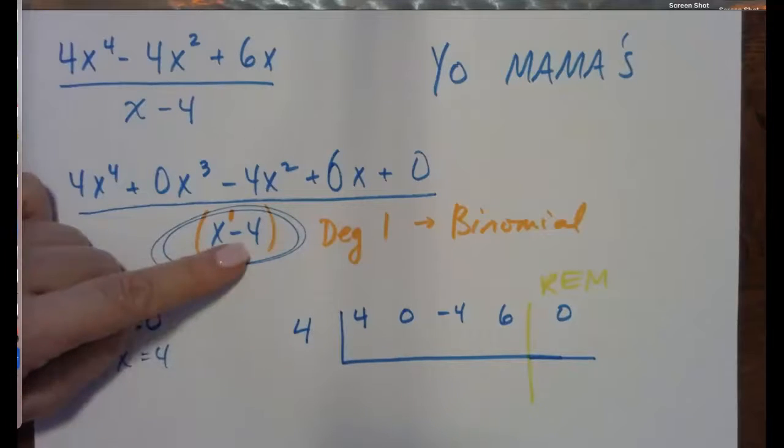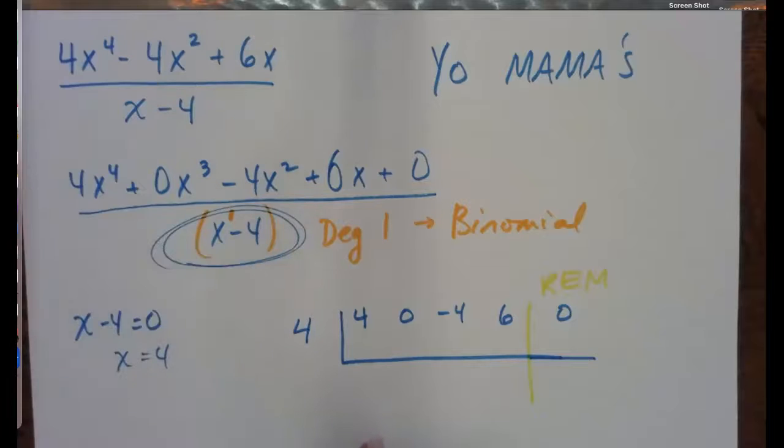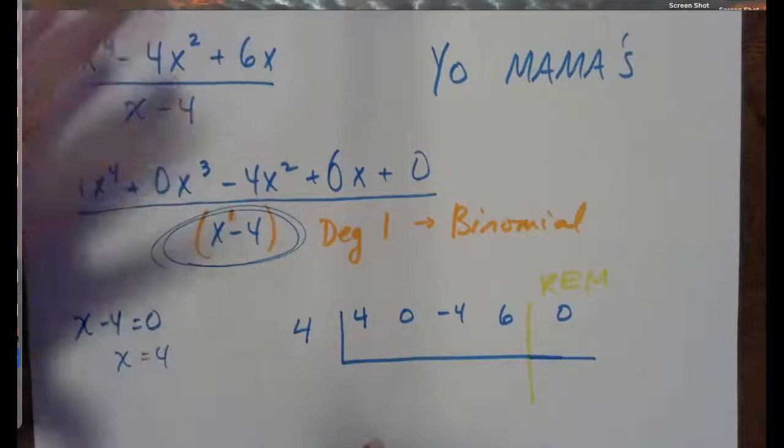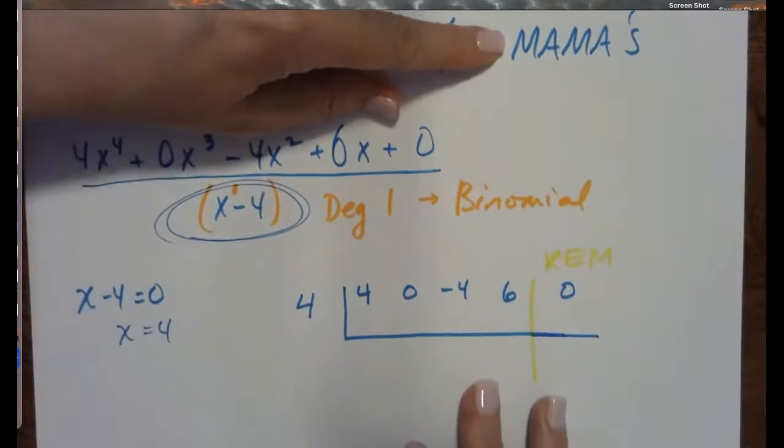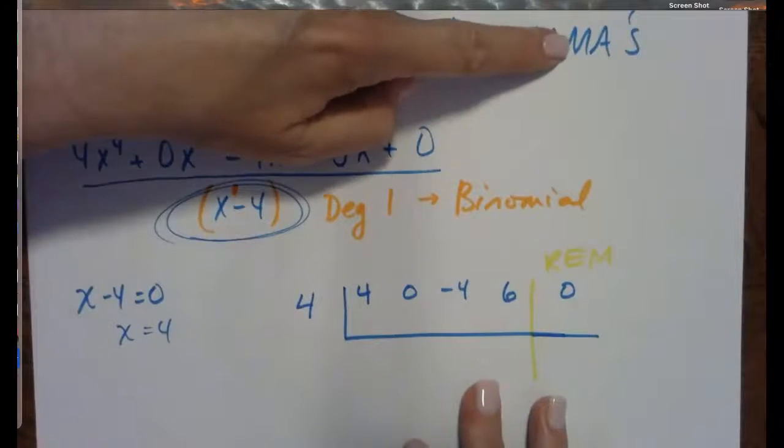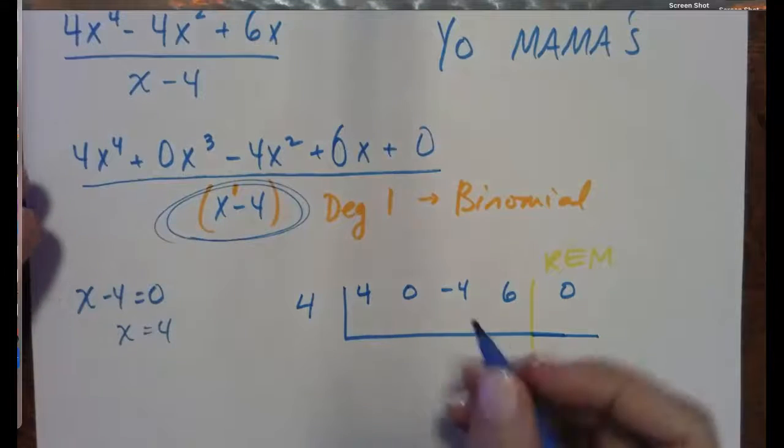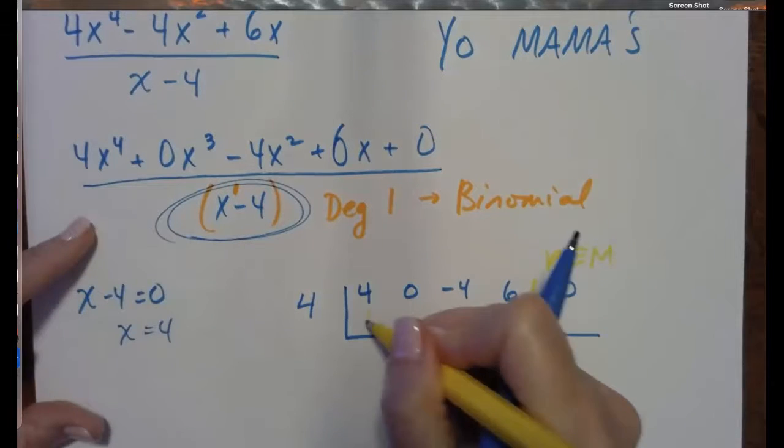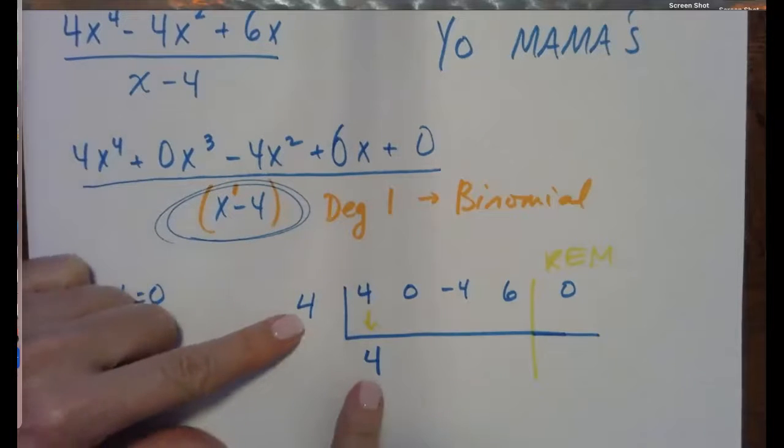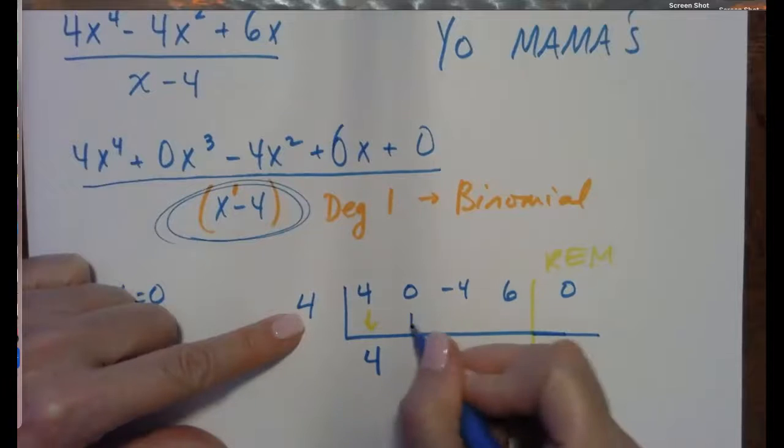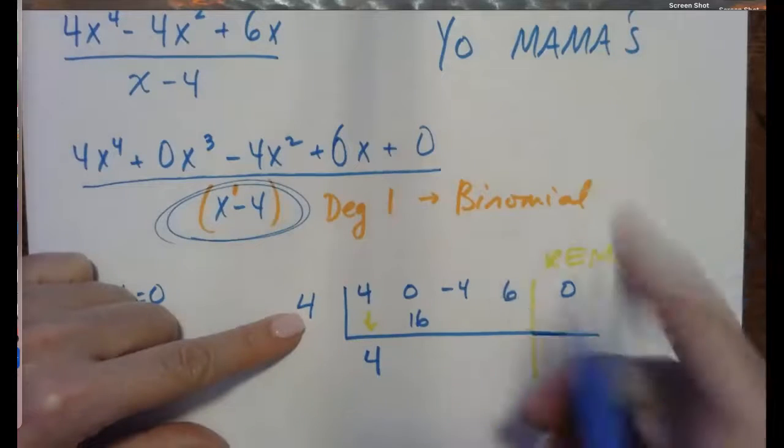Now, because we just changed the sign of that, instead of subtracting, we're going to be able to add, which is why I call this yo mama's division, because we're going to multiply and add and multiply and add as we go through the division. The first thing we have to do is bring down the 4, and then we multiply. 4 times 4 is 16, and then we add. 0 plus 16 is 16.